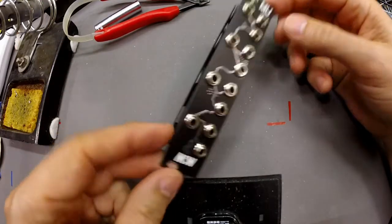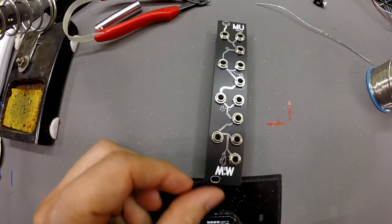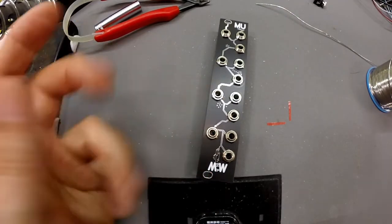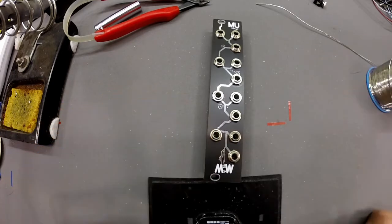Right then. So the Moo Multiple with Thonkicon jacks if you want better jacks for your multiple. Thanks for watching. Take care. Bye.